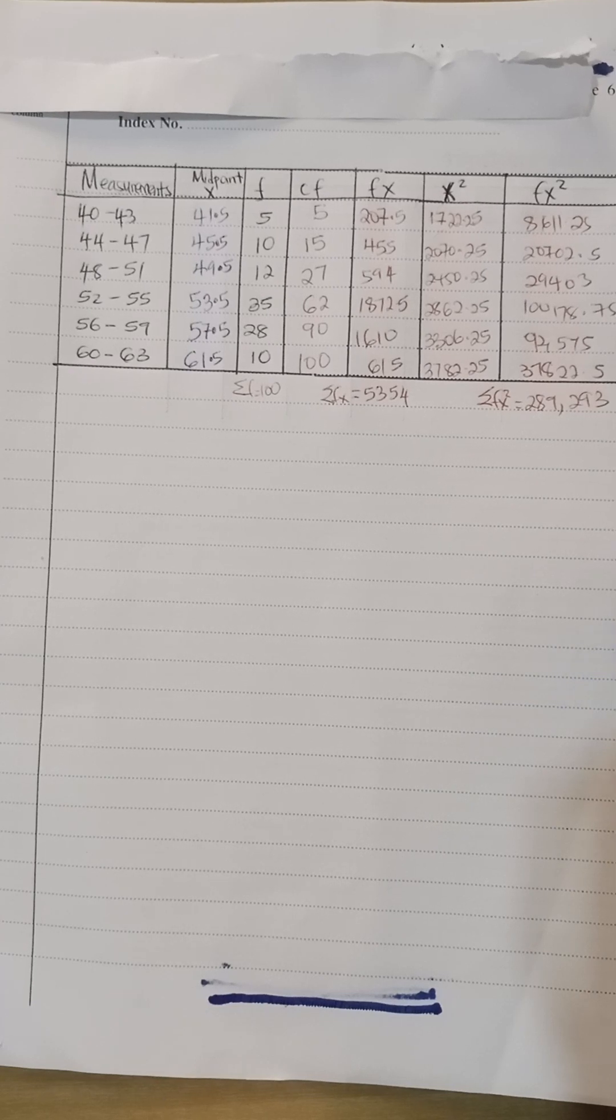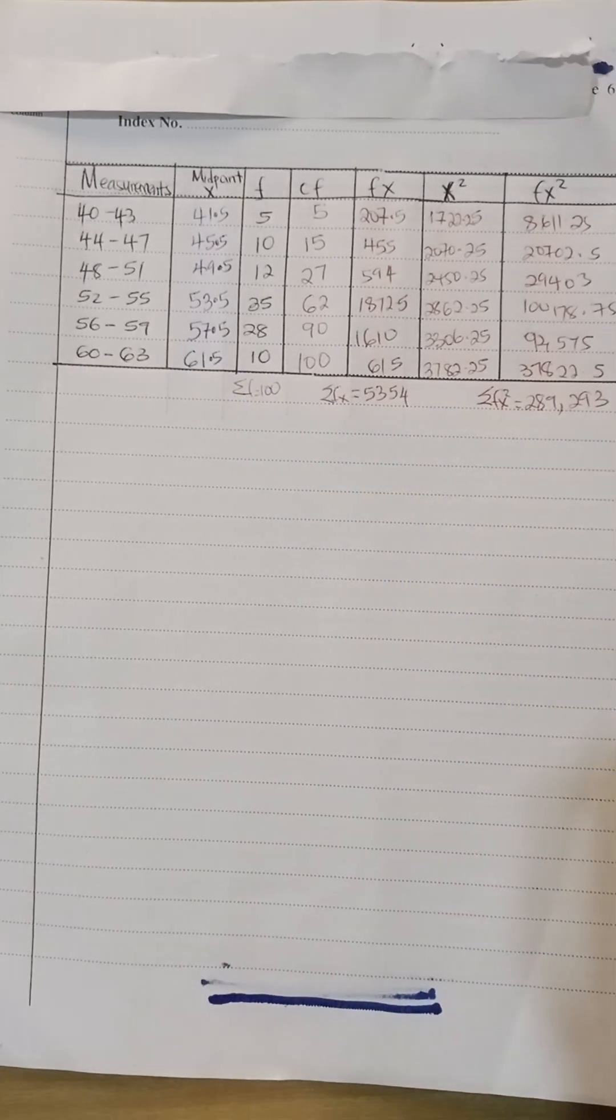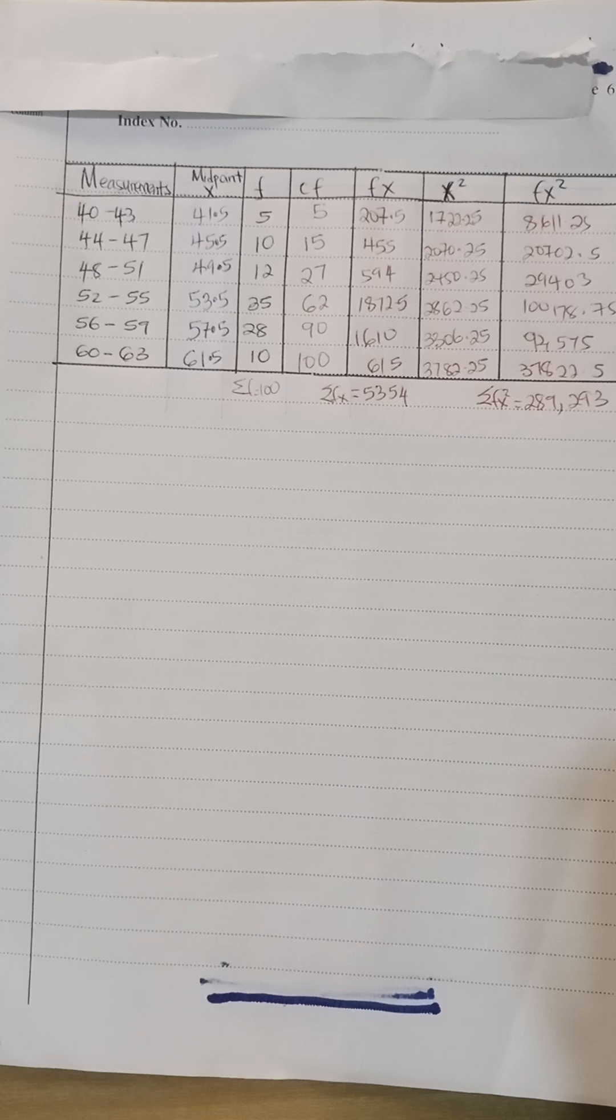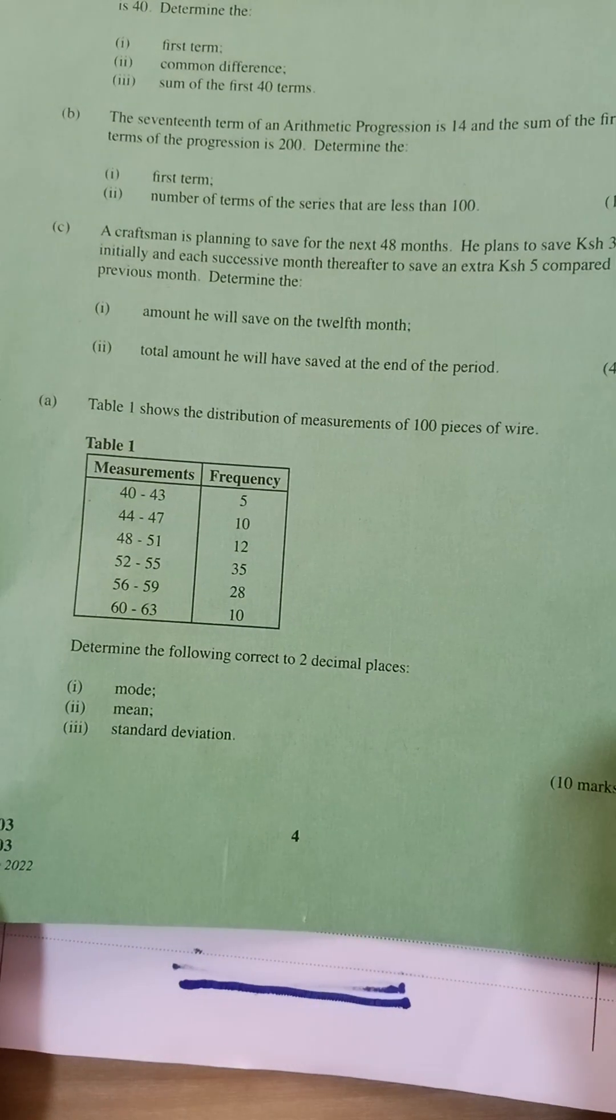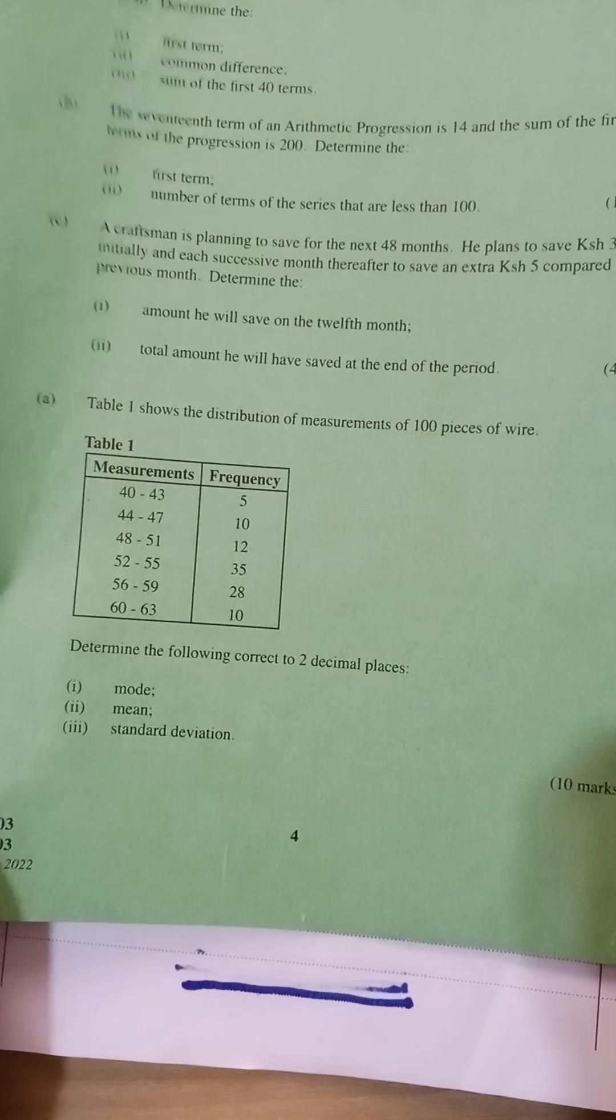Now this summation of fx squared you get 29,293. So if you prepare this table up to that point, you are going to get a mark for each of these. So you'll have 4 marks so far if you prepare correctly. Now the question was asking you to get the mean, the mode, and the standard deviation correct to decimal places.